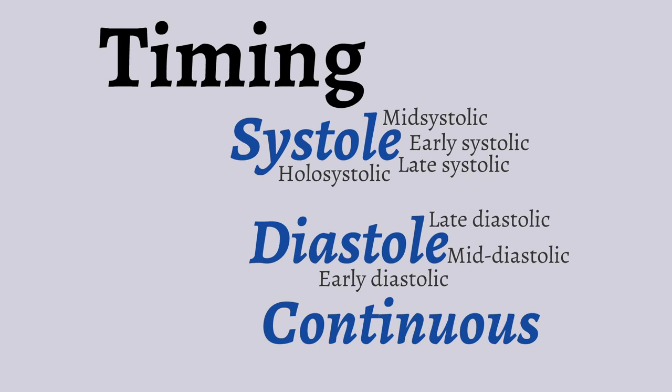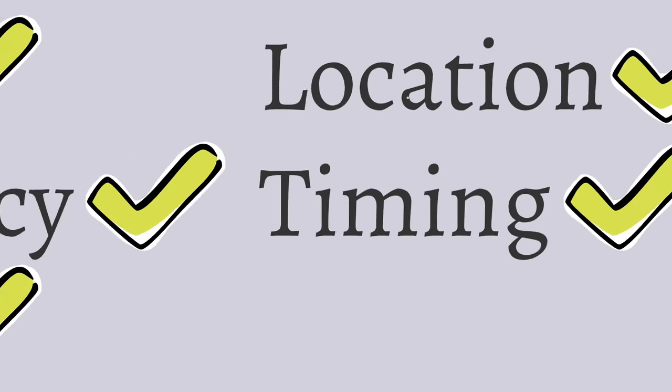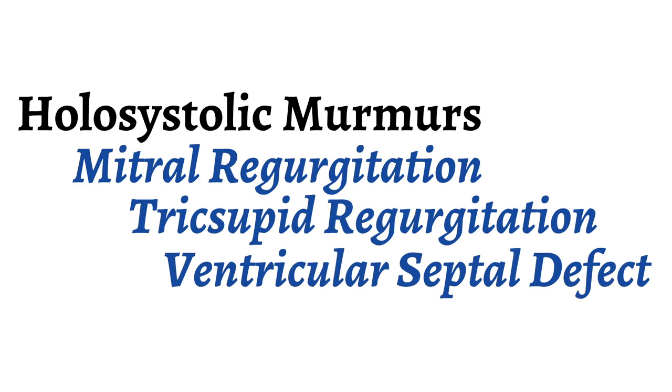We will review the major and most commonly tested murmurs over the next several videos, but realize there are other murmurs that exist besides the ones we cover. We will start with holosystolic murmurs. There are three major heart abnormalities that cause a holosystolic murmur: mitral regurgitation, tricuspid regurgitation, and ventricular septal defect.